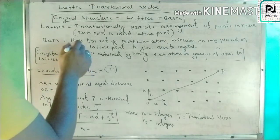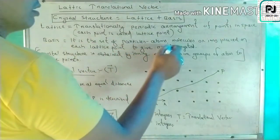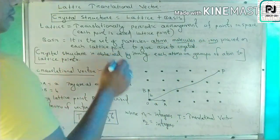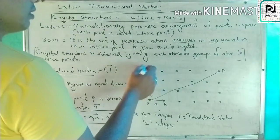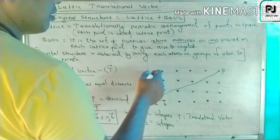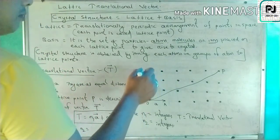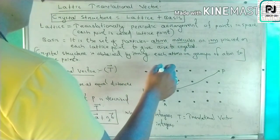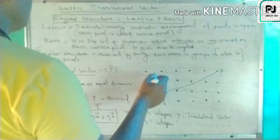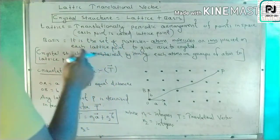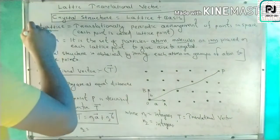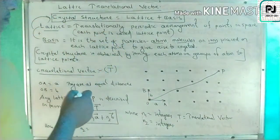The basis is the set of particles, atoms, molecules or ions which are placed on each lattice point. When there is a set of atoms, molecules or ions at each lattice point, that gives rise to crystals. The combination of the basis and the lattice is called the crystal structure.